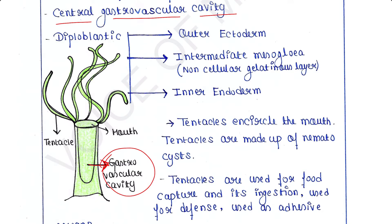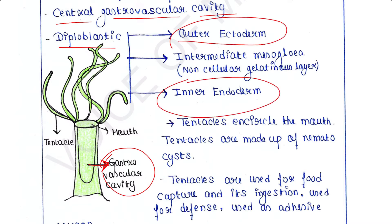They are diploblastic animals. Diploblastic means cells are arranged in two layers: the outer ectoderm and the inner endoderm. The mesoderm or middle layer is absent, therefore they are diploblastic animals.